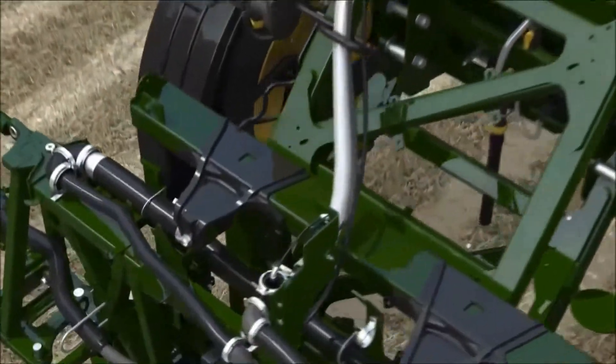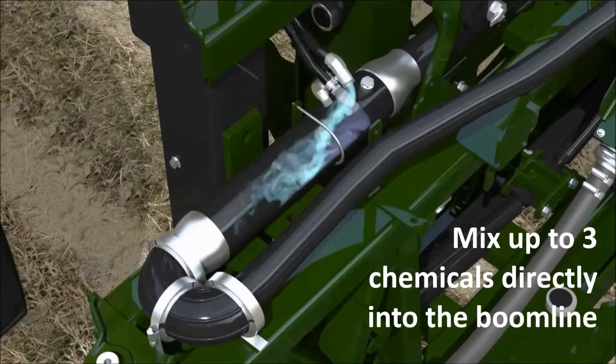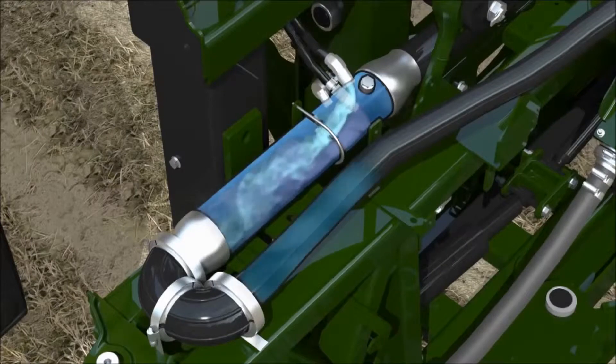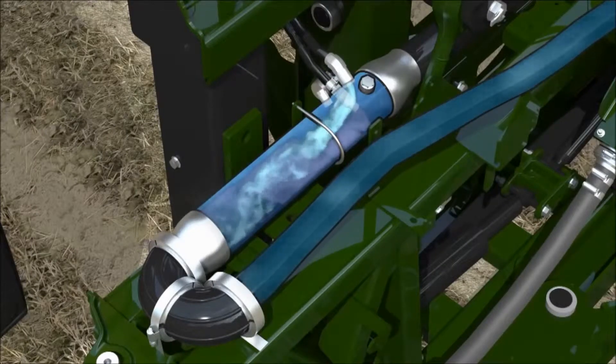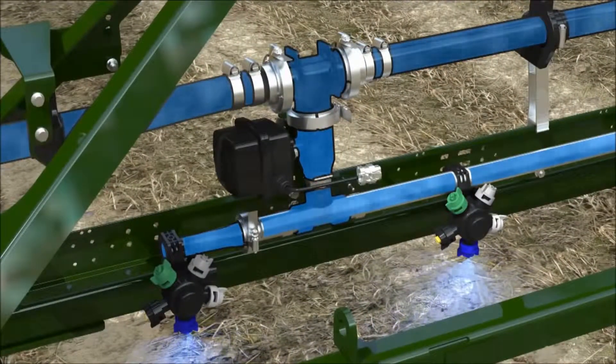During application, the product leaves the direct injection tank and is pumped at the correct rate through the mixing chamber on the boom. There, it's mixed with the carrier flow from the main solution tank at the precise rates during the entire spraying operation, continuing to each section valve until it reaches each spray nozzle.